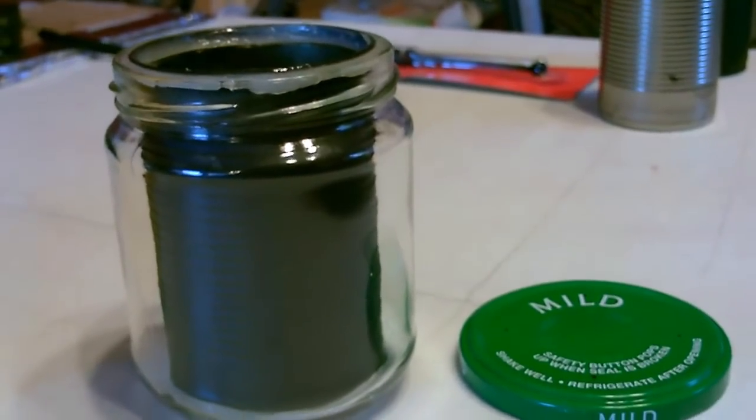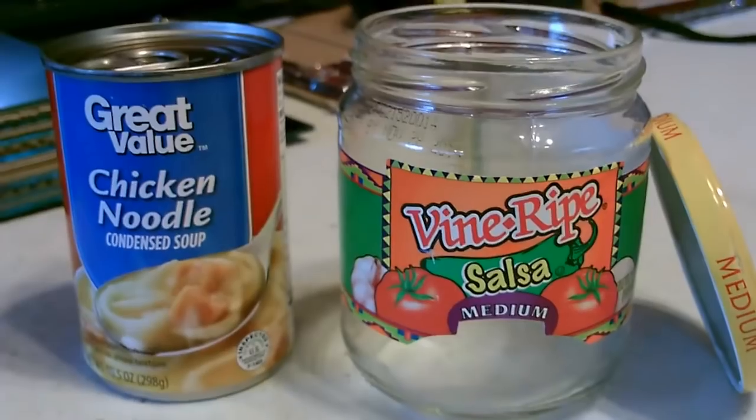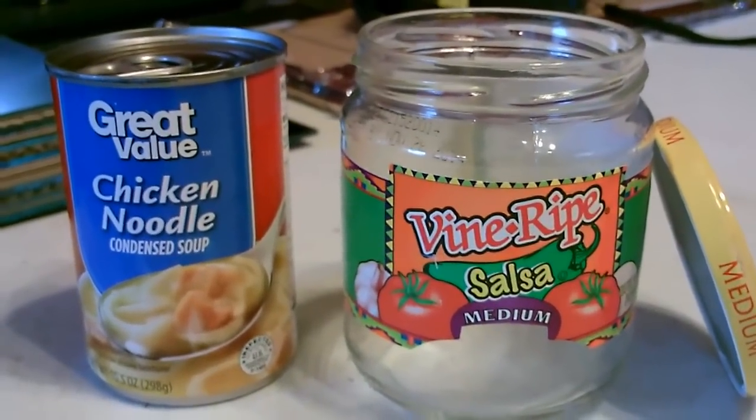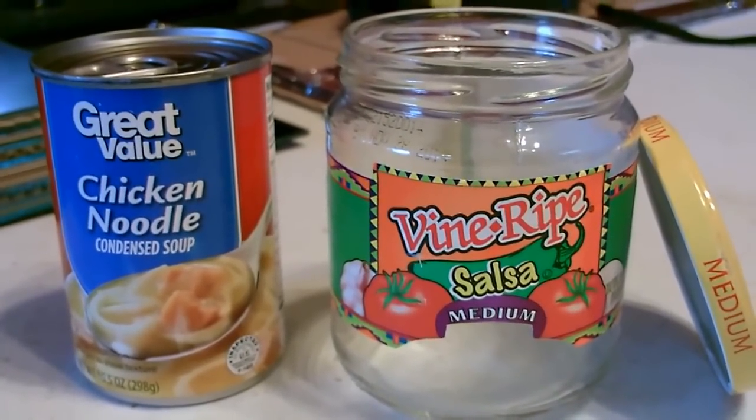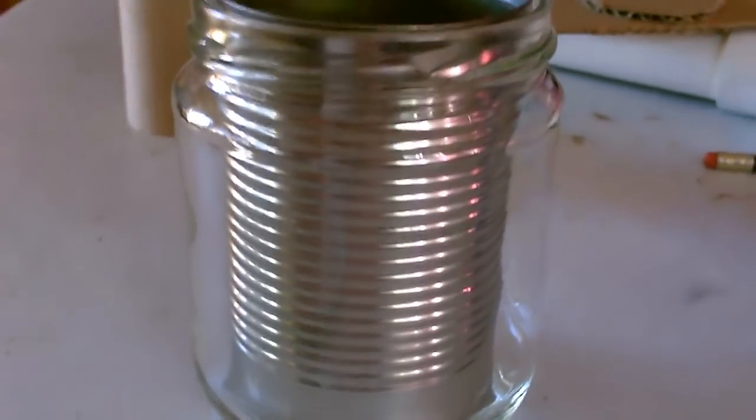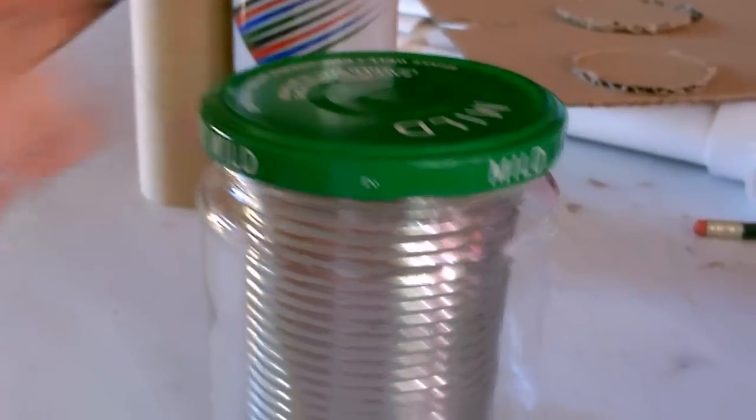Alright, so this cooker is two parts. You got the vessel or container and the reflectors. Let's start with this. That's made out of a glass jar and a small steel can. Perfect height and the lid fits on.